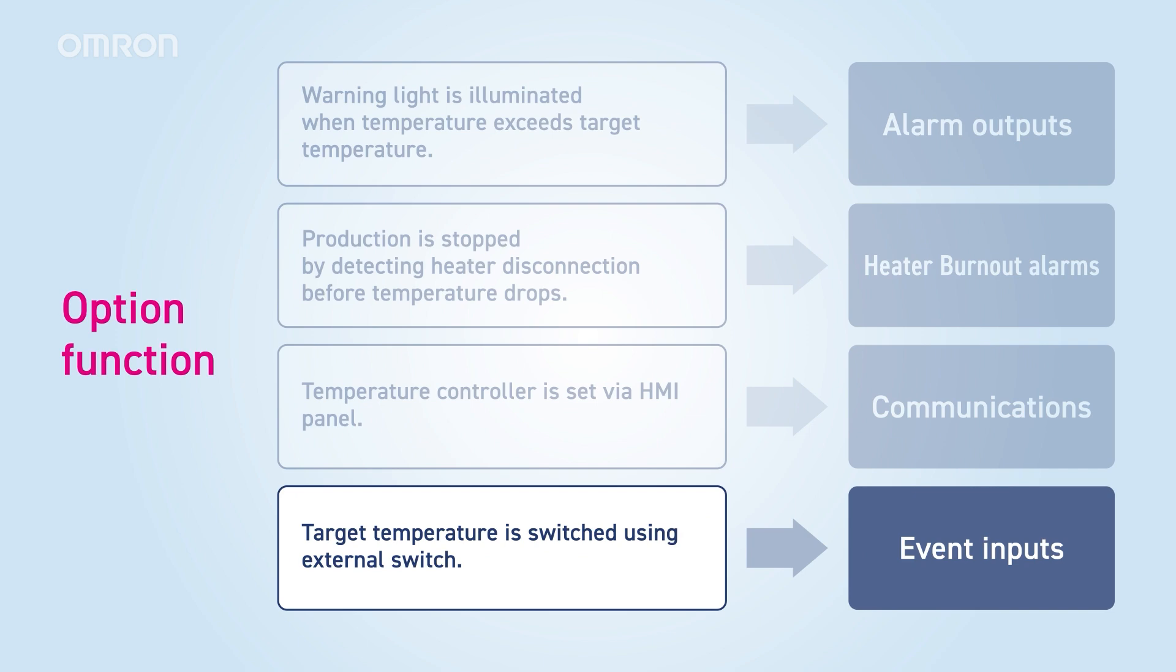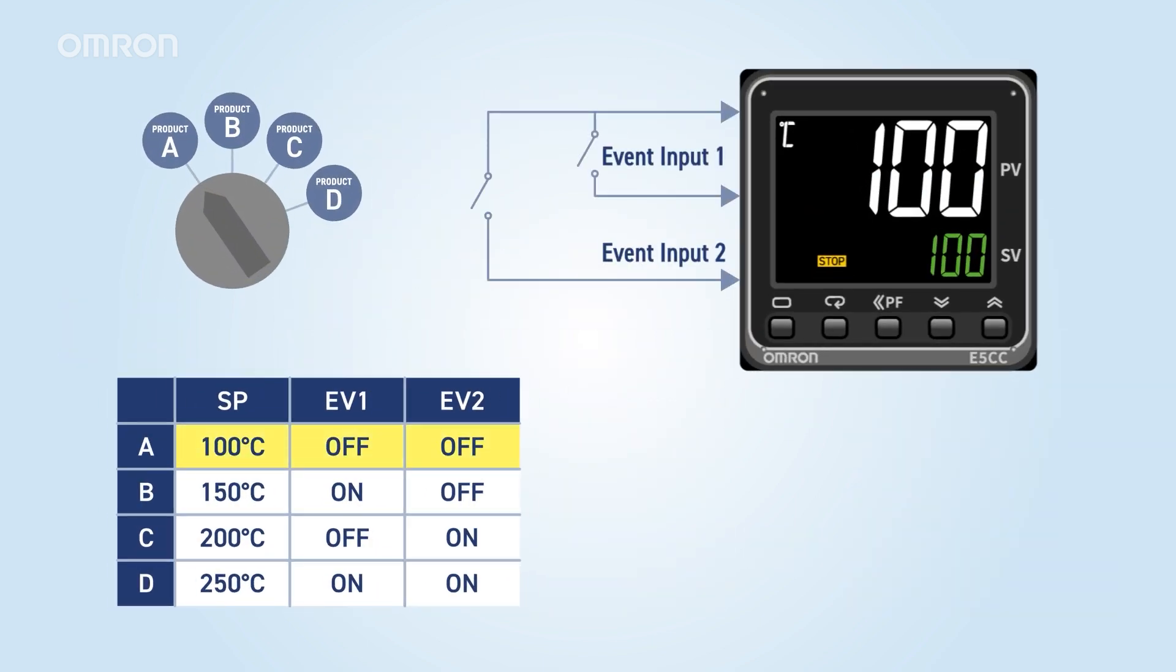Finally, let's explain event inputs. Event input allows you to change the settings of the temperature controller or issue operation commands like run-stop using external signals. For example, you can use an external switch to change the set temperature for each product, helping to prevent setting errors.